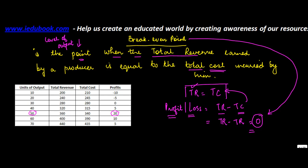Now if you look at the table on your left, where is the profit or loss equal to 0? At this point, the level of output is 30 units. As we can see, total revenue is equal to total cost — the total revenue at 30 units is 280, and the total cost is also 280. So we say that break-even occurs at 30 units of output.